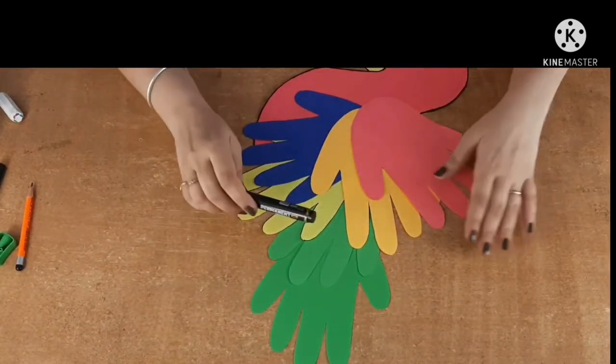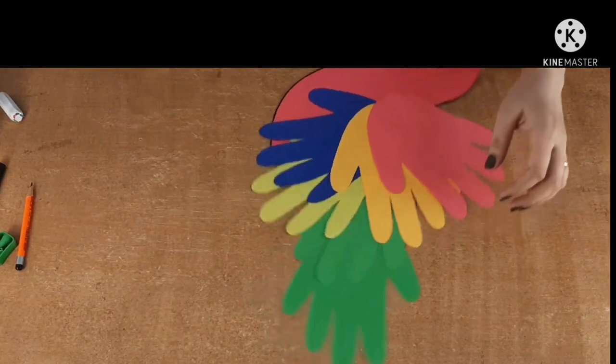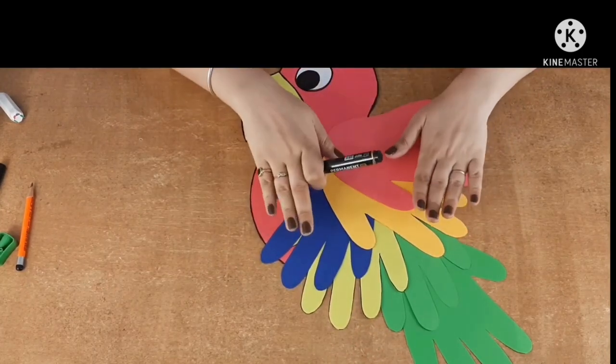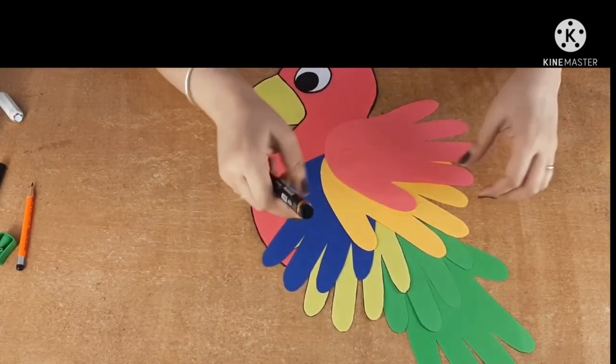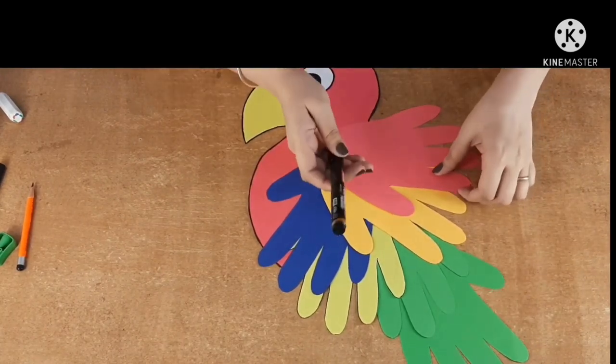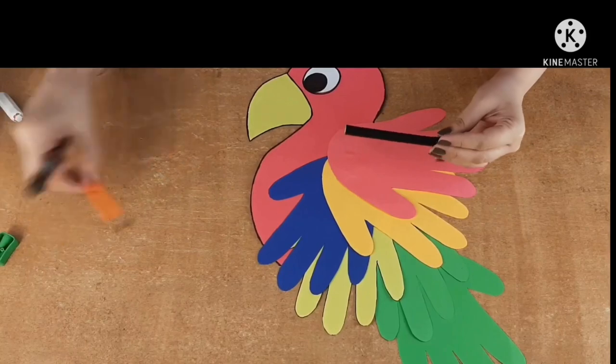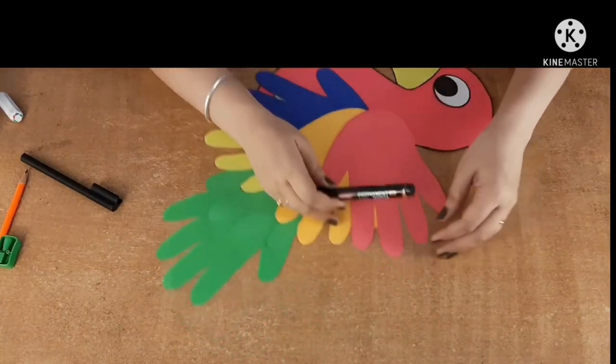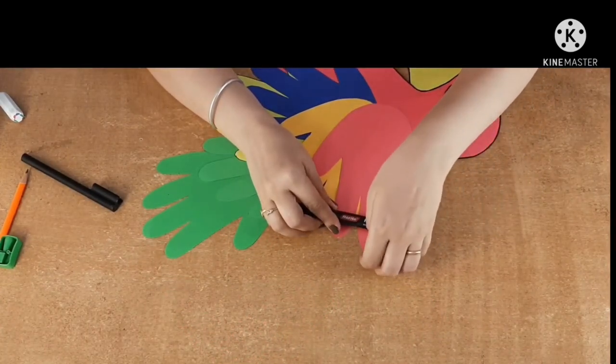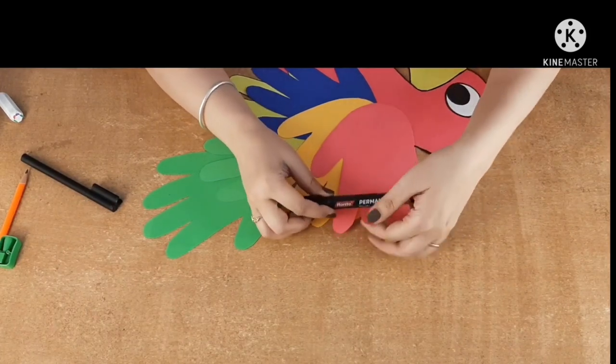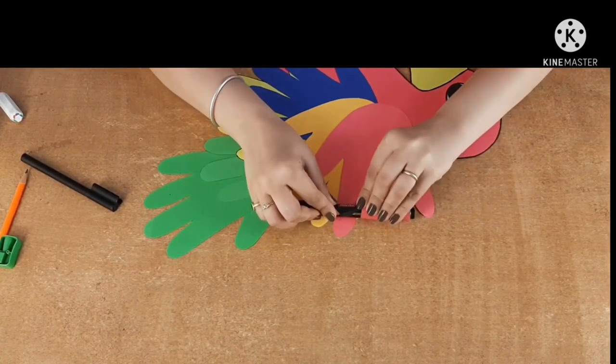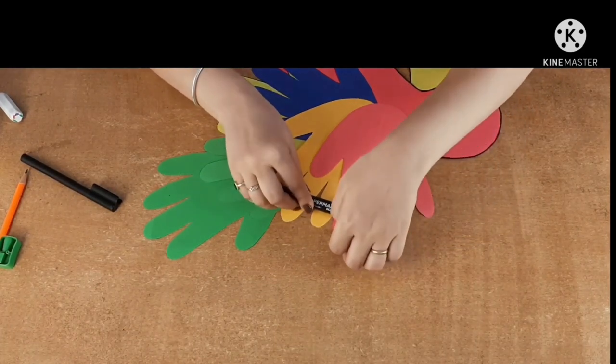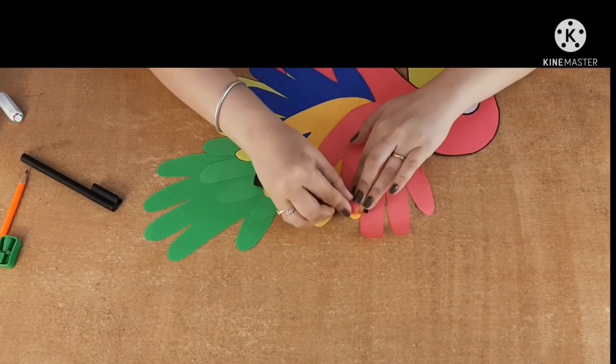Okay, now is the fun part. Now what we're going to do? Bird's wings are not so flat. They are slightly like this. So what we do is, with the help of this marker, you can take a sketch pen or you can take a pencil, anything that is a little round. I'm just using this marker. Now keep the marker like this on the wings.